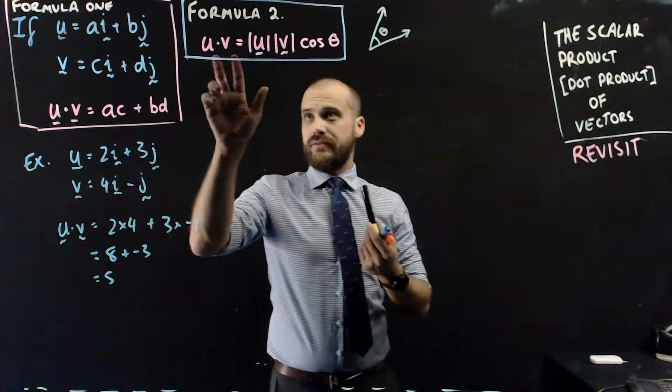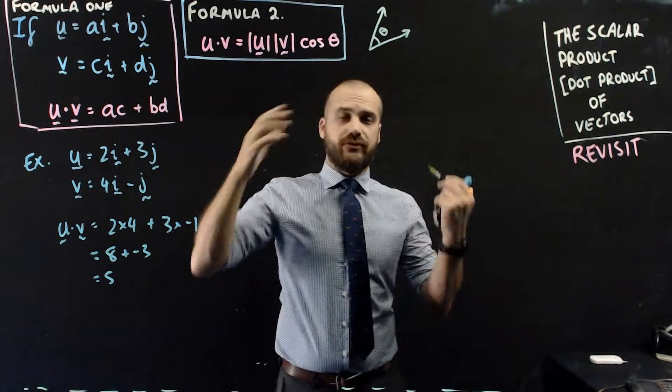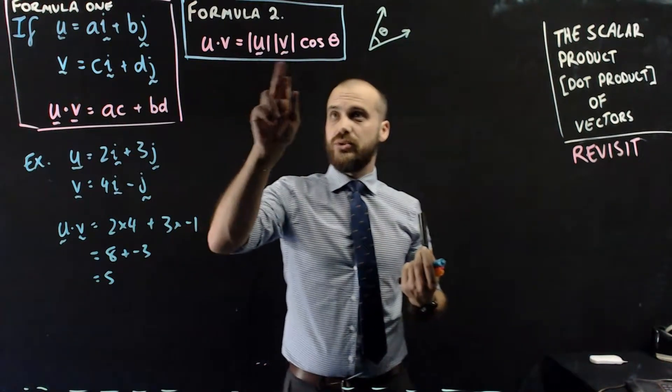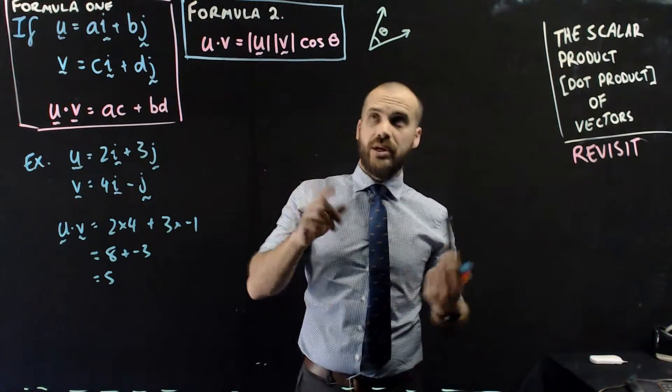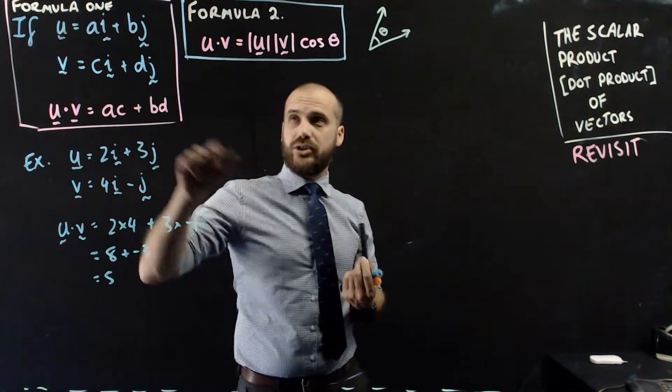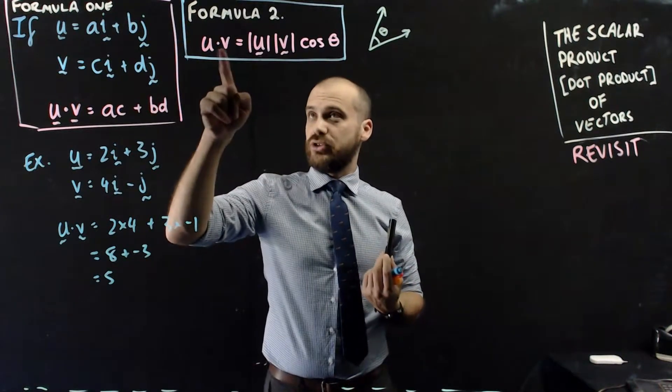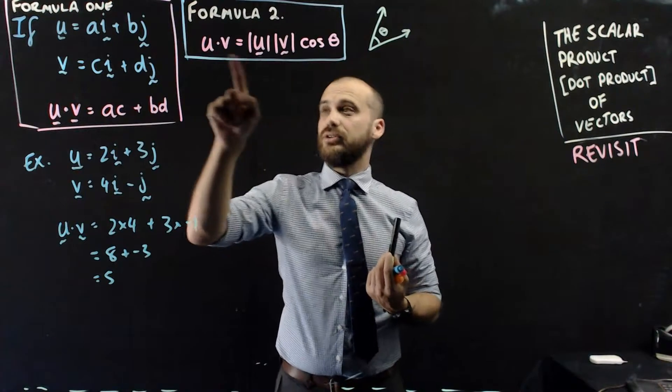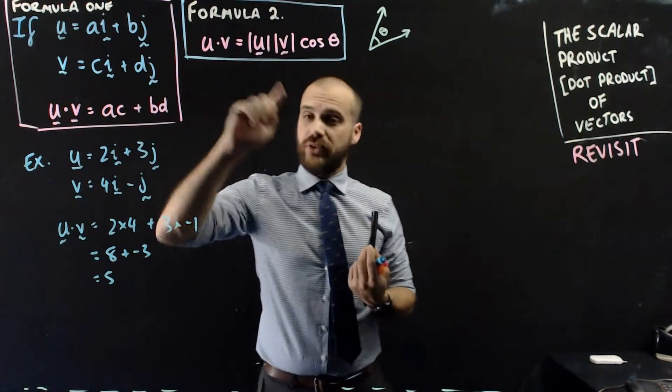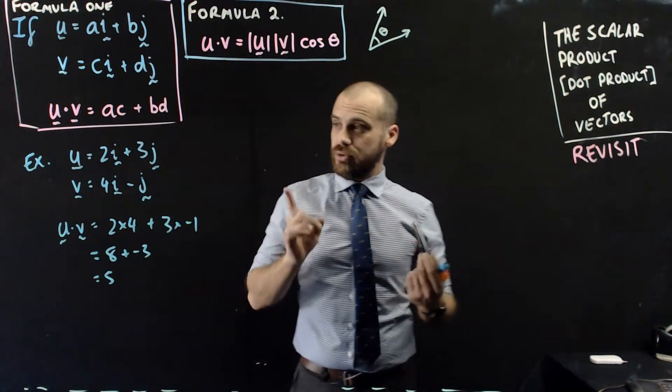As long as we have three of these items, we can find the fourth item. If we know the dot product and u and v, we can find the angle between them. If we know the angle between them and two magnitudes, we can find the dot product. If we know the angle, the dot product, and one of the magnitudes, we can find the other magnitude. Let's do an example.